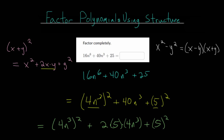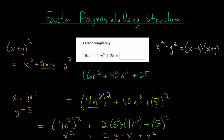That matches up with our pattern. Comparing it to the formula, 4n to the 3rd squared is like our x squared, then we have plus 2 times y times x — we can switch the order — and then plus y squared, which is 5 squared. So this problem can be rewritten using our perfect square formula. We know we can rewrite this as x plus y squared, which gives us 4n to the 3rd plus 5, all squared.